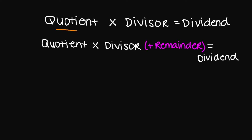When you check your answer, you need to multiply your quotient times your divisor, which is going to equal your dividend. If you have a remainder, you're going to do the same thing, except you're going to multiply your quotient times your divisor and add your remainder, and then you will notice that will equal your dividend.